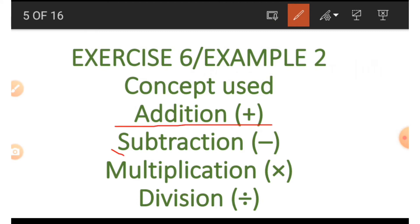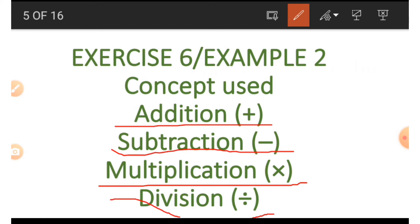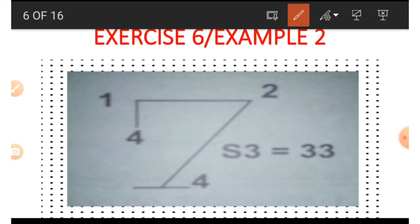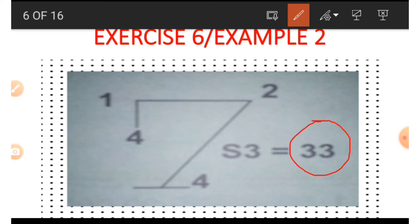Now let's go to example two, where we are going to be making use of the concepts of addition, subtraction, multiplication, and division. The shape looks like a seven, with numbers around it. The 'S3' label means sum times three — so when you add up everything and multiply by three, you get 33. To get 33 we must make use of every other number.